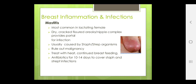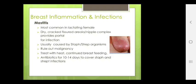Breast inflammation and infections: mastitis is common in lactating females. Dry cracked fissures in the areola or nipple complex provide a portal for infection, usually caused by staph or streptococcal organisms. Rule out malignancy. Treat with heat, continued breastfeeding and antibiotics for 2 weeks to cover staph and streptococcal infections.